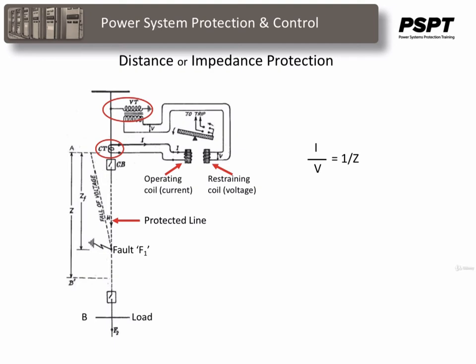The torque to operate the relay may be described by the fraction I over V, or the current over the voltage. As the current increases, the relay will tend to operate. As the voltage increases, the relay will tend to restrain.